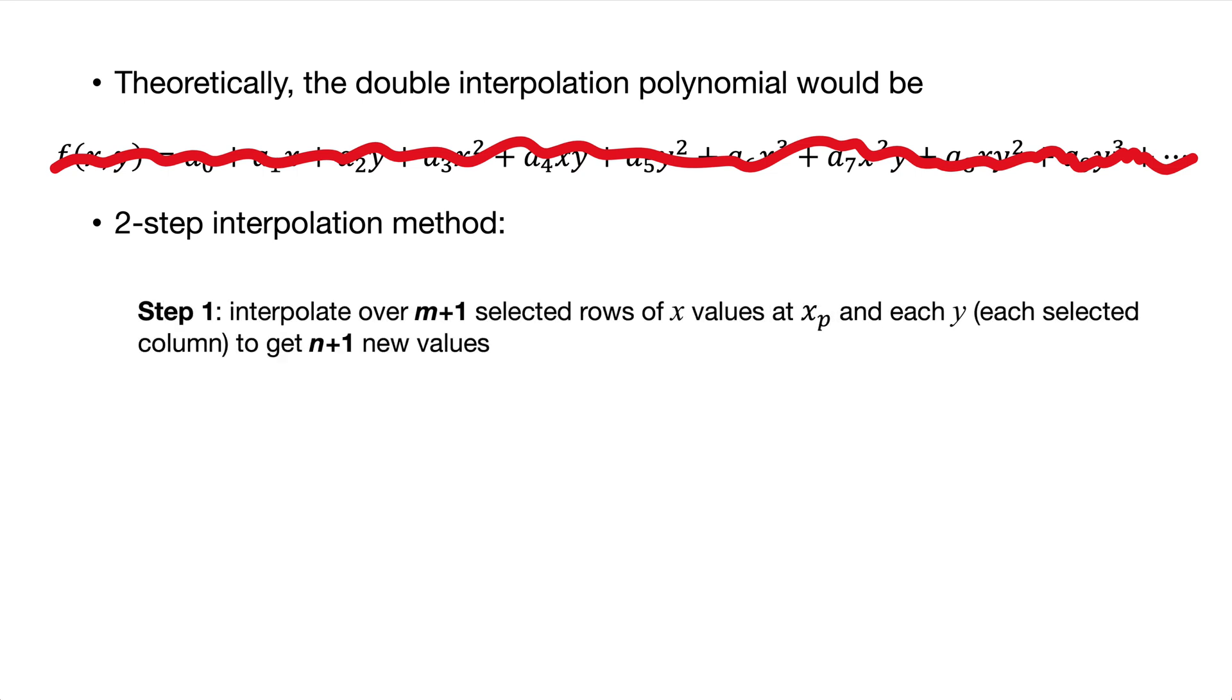In step one, we perform interpolation over m plus one number of rows in the selected zone. m here will be the degree of the interpolation polynomials. In our example, we selected four rows, so m will be three. The columns are represented by y's. We have n plus one selected columns from y zero to yn, and we have to perform the interpolation for every column. So in our example, the interpolation will be done four times since we selected four columns in the zone. As a result, step one will give us n plus one interpolated values for each column. The values will form a new row corresponding to xp, as we'll see later in the numerical solution.